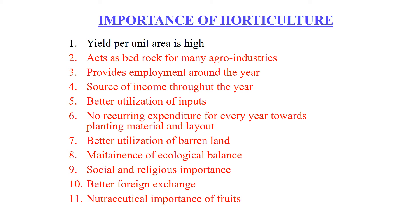Horticultural crops have social and religious importance as well. Crops like coconut, arecanut, turmeric, various flowers, and betel vine are used in various religious functions. Fruits like bael are offered to Lord Shiva, and mango leaves are used for the preparation of thorans. Flowers are used as a symbol of love and friendship and for welcoming guests.